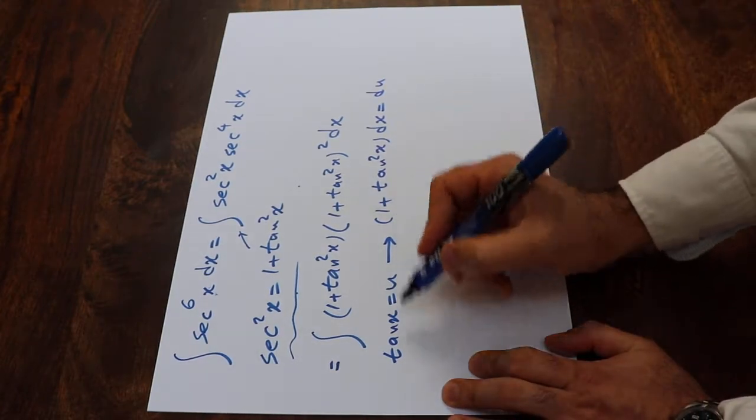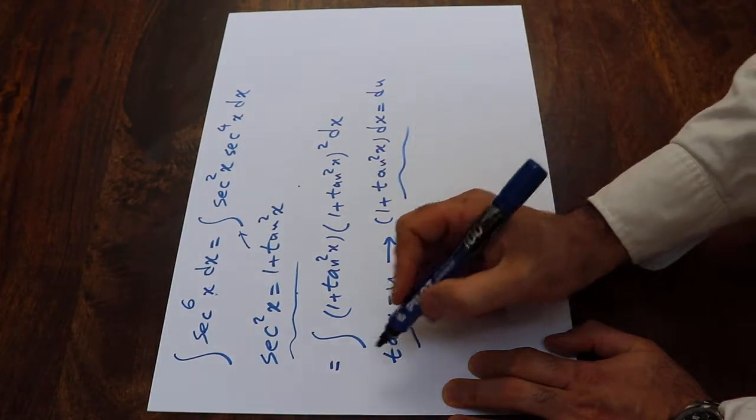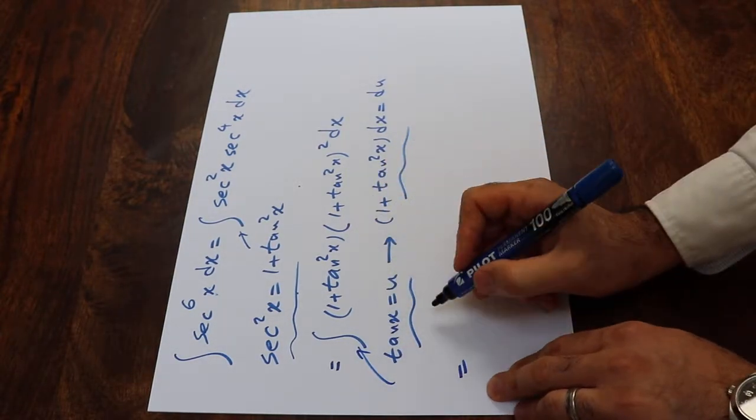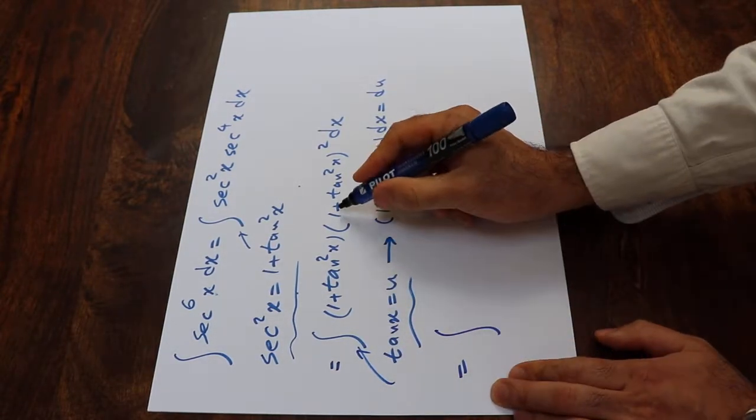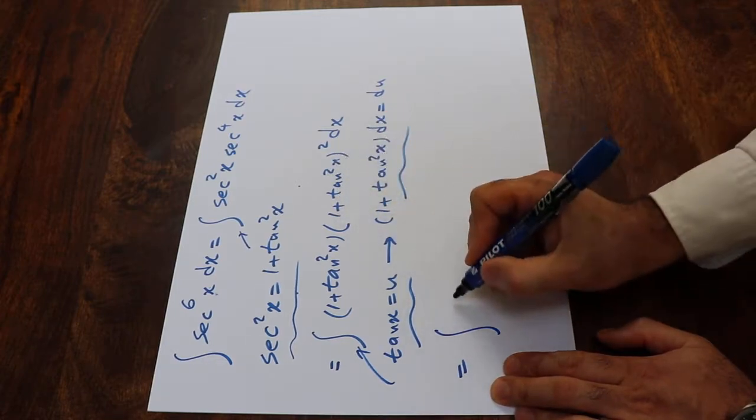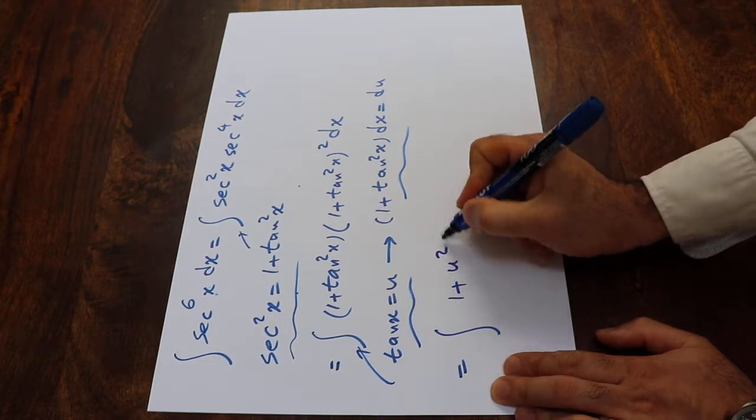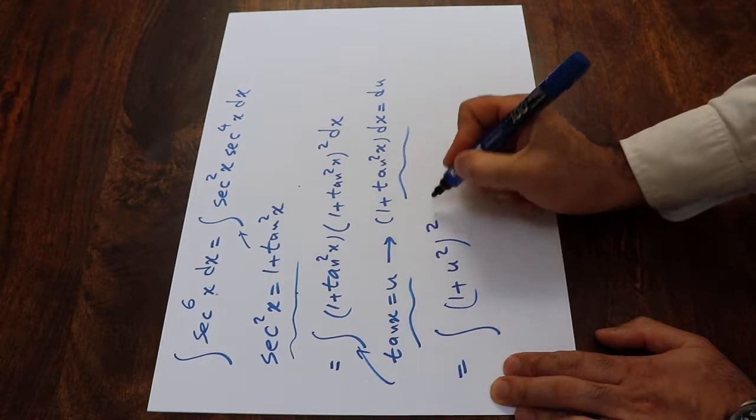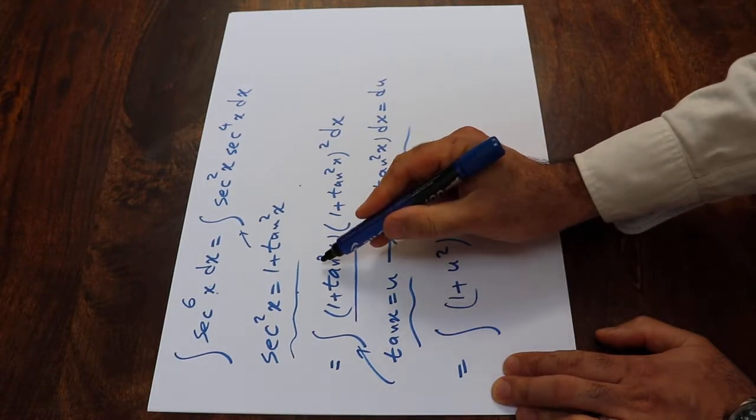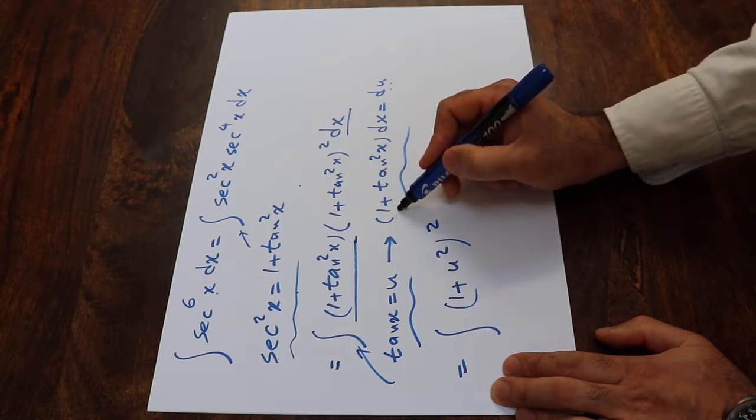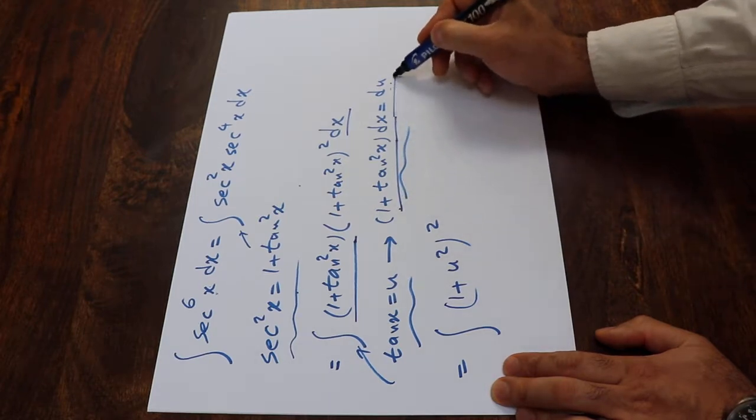All you need to do here is substitute these two expressions into this integral. And if you do that, you can rewrite this integral as integral of, instead of 1 plus tan²x, I write 1 plus u², because tan x is u, therefore tan²x will be u², with the power of 2 times, instead of 1 plus tan²x times dx, I simply write du, because 1 plus tan²x times dx is equal to du.